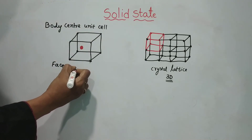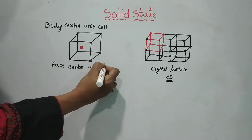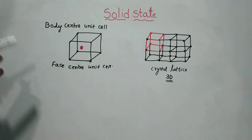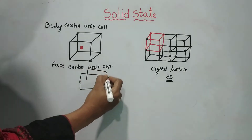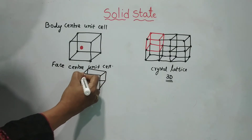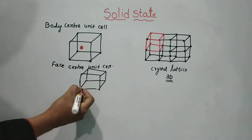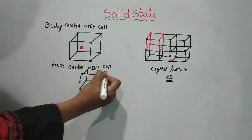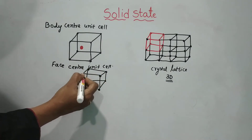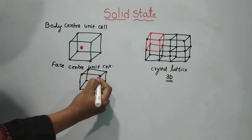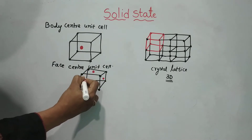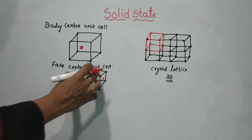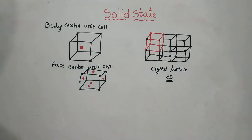This one is a face center unit cell. In a face center unit cell, there is one particle on each face — this face has one atom, this face has one atom, the lower face has one atom, and the side face has one atom. This is the face center unit cell.